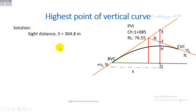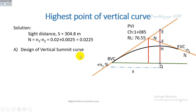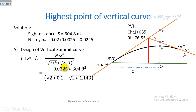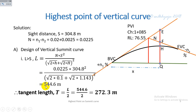Solution: Given sight distance S = 304.8 m. The deviation angle N = n1 − n2 = 0.0225. For the design, assuming stopping sight distance S < L, we use: L = N·S² / (√(2h1) + √(2h2))². This gives L = 544.6 m. Since 544.6 m > 304.8 m, the assumption is valid. Therefore, the length of the vertical summit curve is taken as 544.6 m.